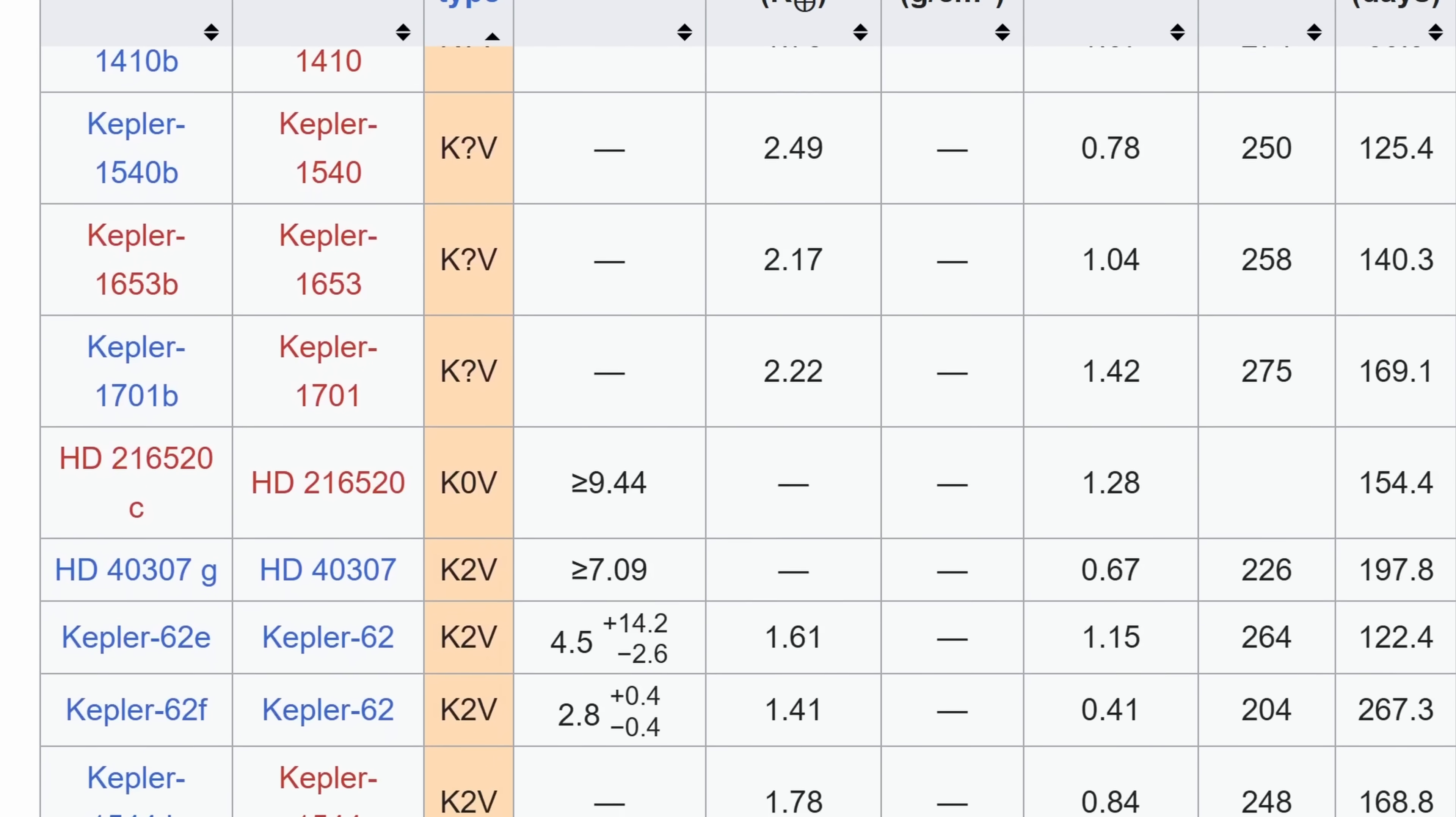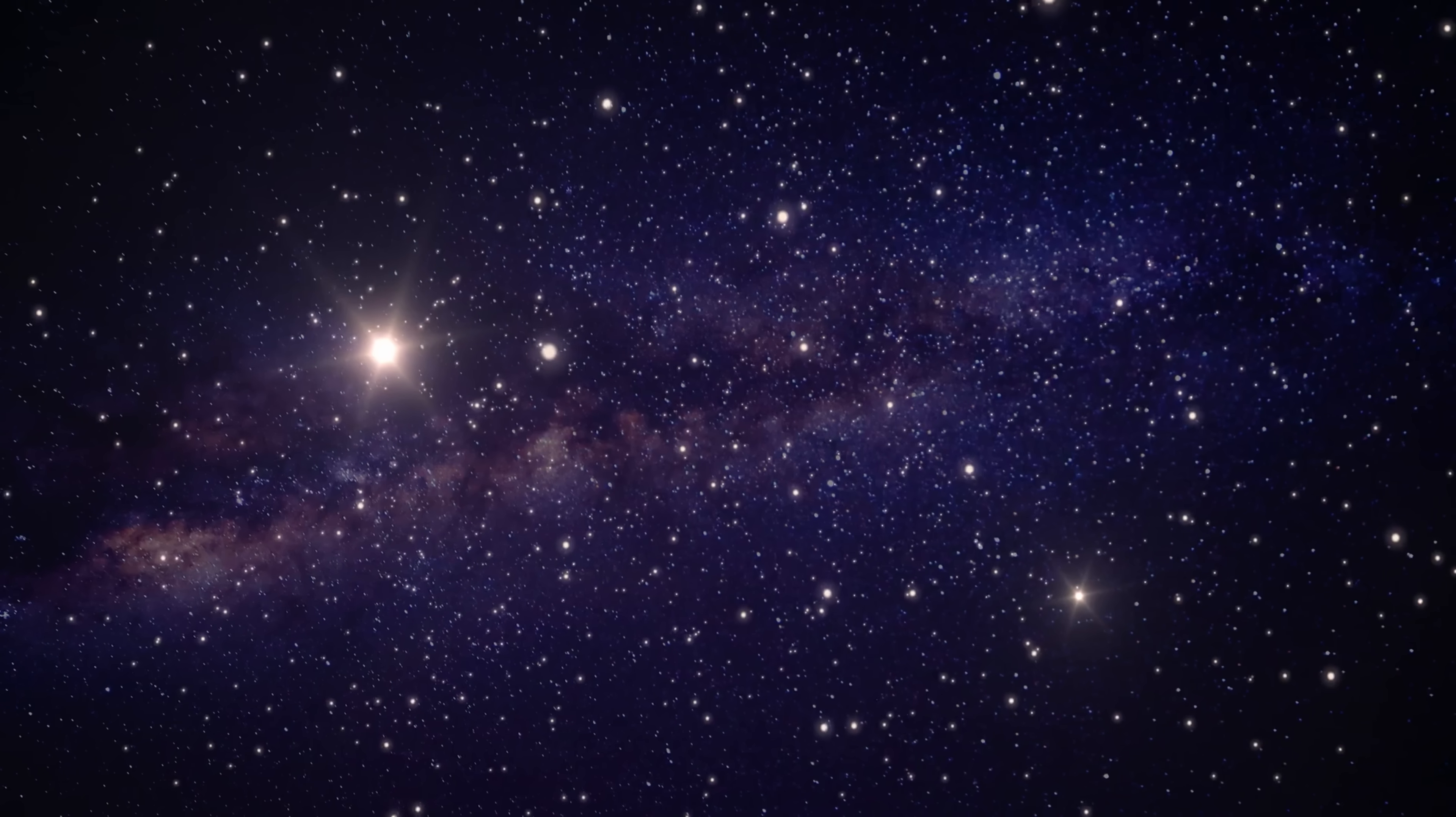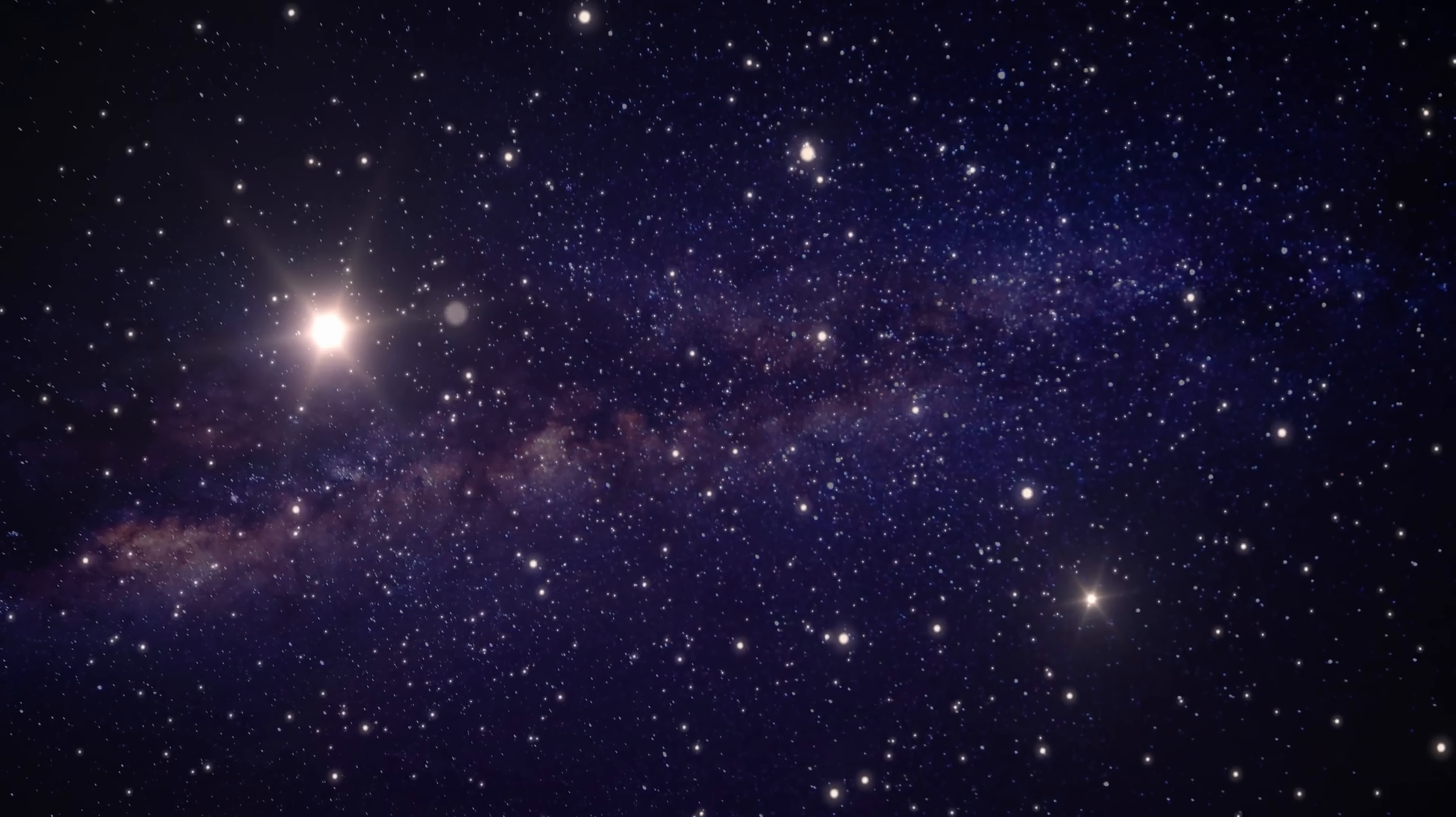And so this whole list becomes much smaller if we make more conservative assumptions, ignoring star systems where we actually don't know certain properties. For example, ignoring some of the larger planets.